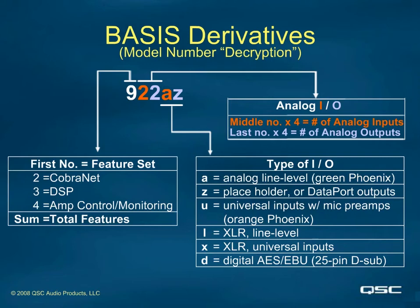For example, from the previous screen, we saw that a model was called the 904ZZ. First, we know it has to have all of the features of the basis family — CobraNet, DSP, and amplifier control and monitoring. We also know it has no analog inputs — the zero in the name. Therefore, the first letter Z is merely a placeholder. But the device has 16 channels of analog outputs — the number four multiplied by four. Since it has amplifier control and monitoring, as the nine tells us, it must have data ports. Therefore, the final Z means data ports — it is not a placeholder.